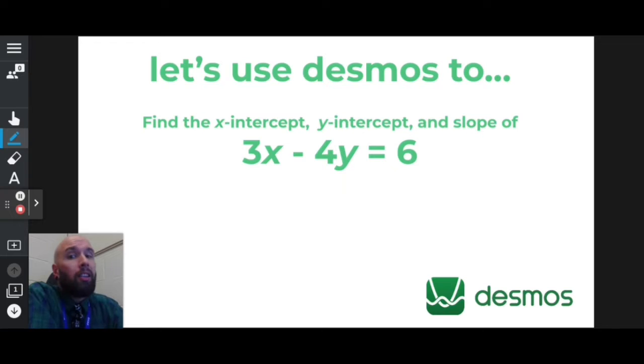Hi, friends. Let's use Desmos to find the x-intercept, y-intercept, and the slope of 3x minus 4y equals 6. I wonder how it's done.